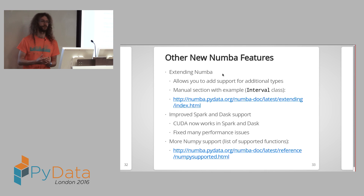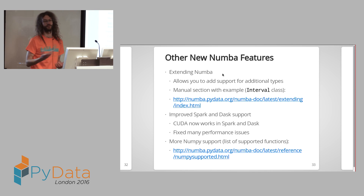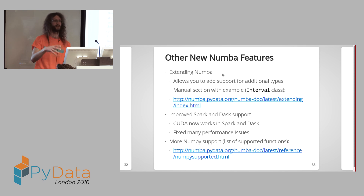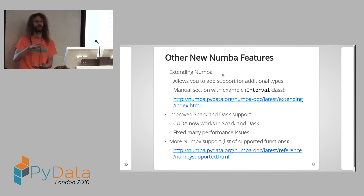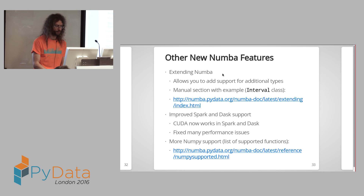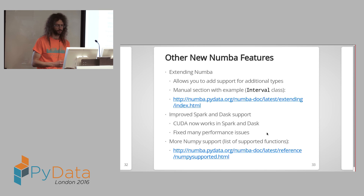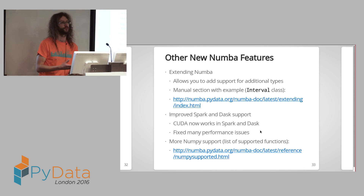Other interesting Numba features: you can now extend Numba to add support for previously unsupported functions, though it's quite a complex topic — there's a detailed section in the manual worth reading. There's also improved support for using Numba with Spark and Dask — CUDA now works with both. There's been a lot of performance issues fixed, and there's continuously more NumPy functions being added; it's worth checking the list of supported NumPy functions in the manual with each release.